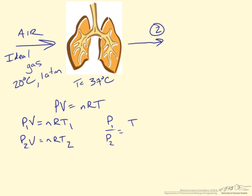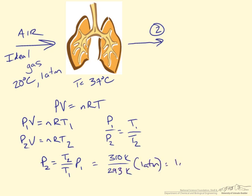P1 over P2 equals T1 over T2. So if we go this route we can see that P2 is going to be equal to T2 over T1 times P1. And this comes out to 310 kelvin over 293 kelvin times 1 atm and that gives us the same thing we saw before, 1.06 atm. So that is the pressure inside the lungs.